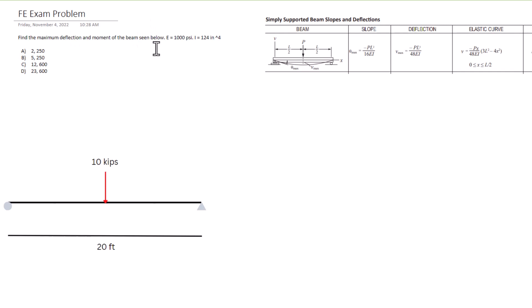Young's modulus equals one thousand psi and the moment of inertia is I equals 124 inches raised to the fourth. So that's what we got there.